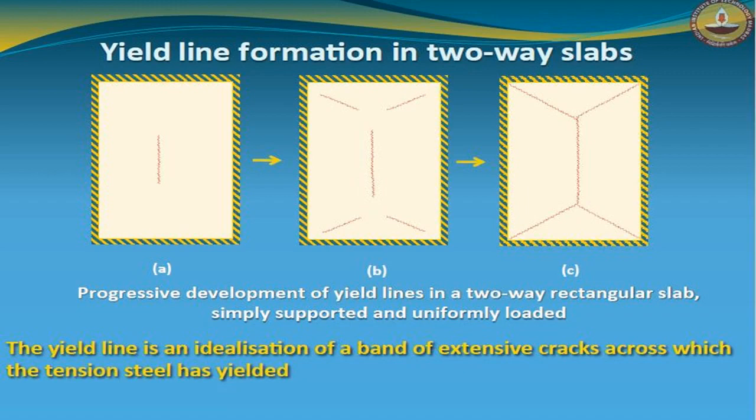So let us take this two-way slab, which is simply supported and loaded with the UDL condition. In this two-way slab, generally in a structure the maximum moment occurs at the centre of the span.